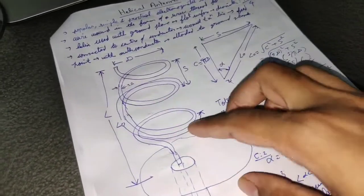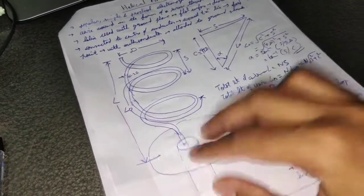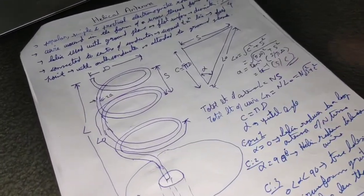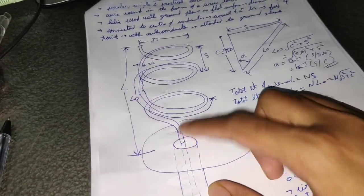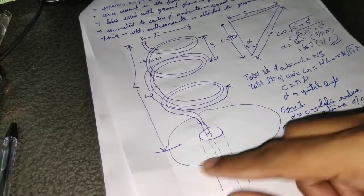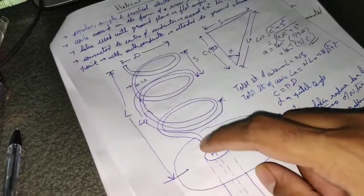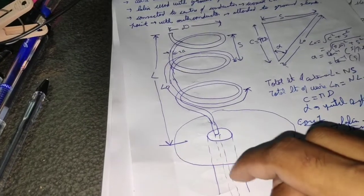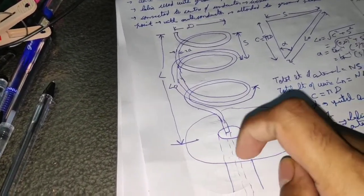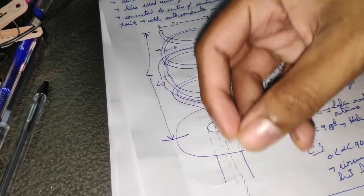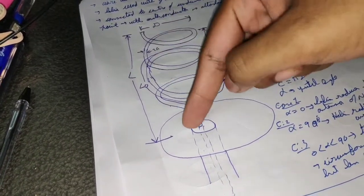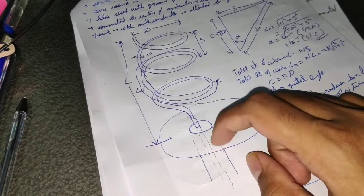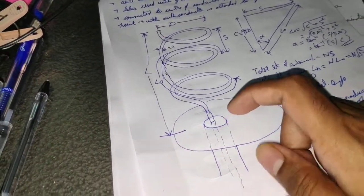The helix is used with a ground plane, which is a flat surface whose diameter is 3λ/4. The helix is connected to the center of the conductor at the ground plane, and that conductor is a coaxial transmission line which serves as the feed — the component that provides signals to the antenna.